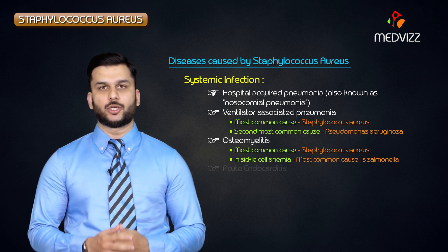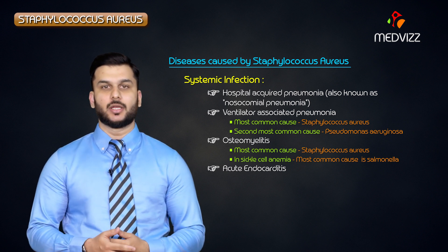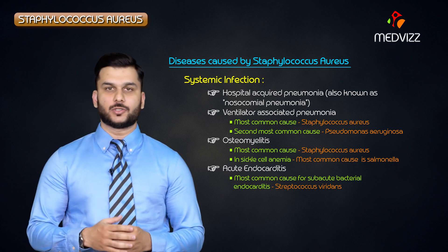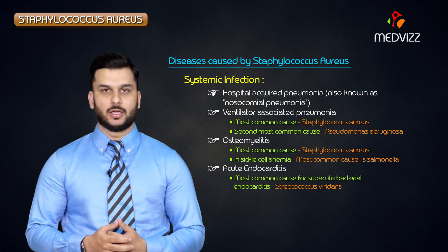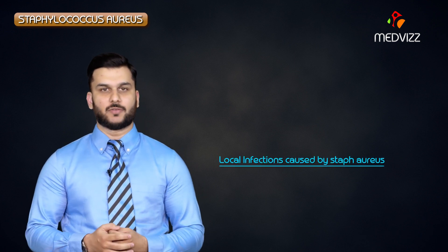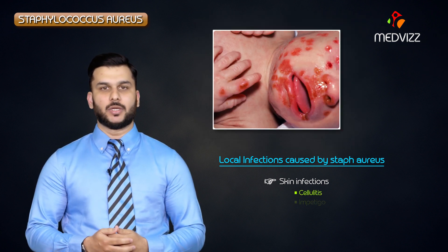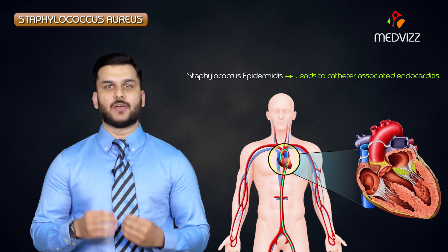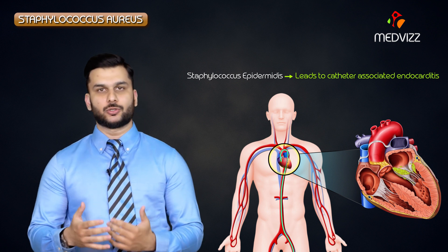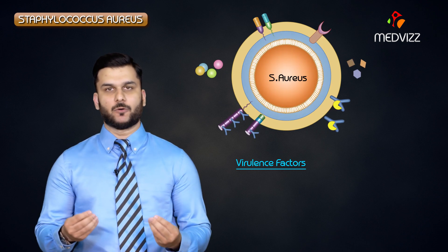Another common systemic infection caused by Staph aureus is acute endocarditis — it is the most common cause of acute endocarditis. Keep in mind that Strep viridans is the most common cause of subacute bacterial endocarditis. Apart from systemic infections, Staph aureus can also cause localized skin infections such as cellulitis and impetigo. Note that Staph epidermidis is specifically associated with catheter-associated endocarditis.